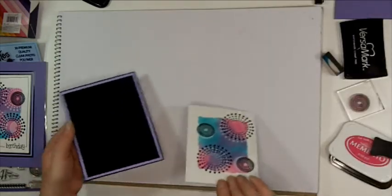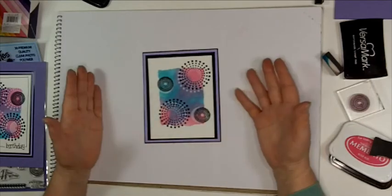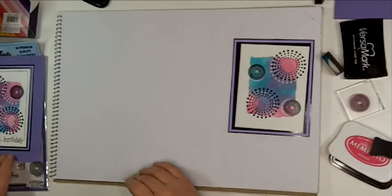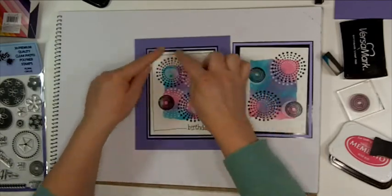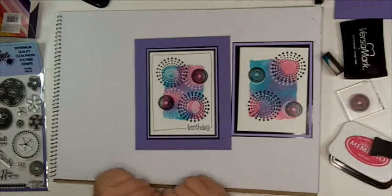As you can see, if you layer it up onto black card, it makes the design really pop out. And what I've done on the original, I'll just show you here. I've actually gone around it with a black fine liner pen and I've just stamped birthday in the bottom. So there we go.